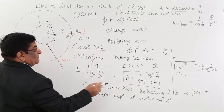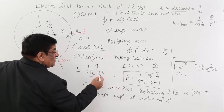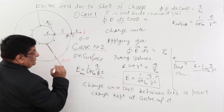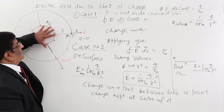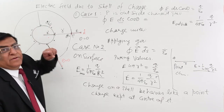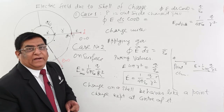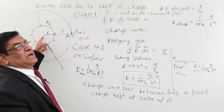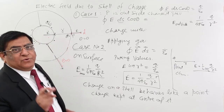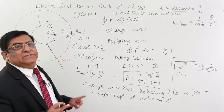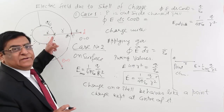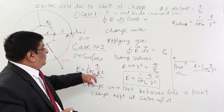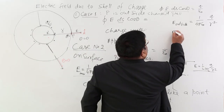What we are considering here is the electric field due to a shell of charge — case number one, where point P is outside the charged shell. This was the calculation for this purpose, and we got this result: E outside is equal to 1 upon 4 pi epsilon naught times Q upon r squared. If we decrease this r, E will become stronger. When we come to the surface, r becomes equal to capital R, and E equals 1 upon 4 pi epsilon naught times Q upon R squared — that is on the surface, which is case number 2.